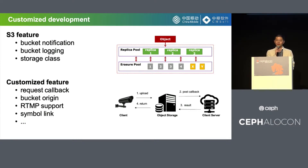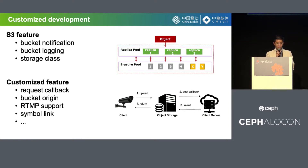Storage class is now implemented in the master branch. It is used to migrate data between different pools — we can create a pool with a replicated backend and a pool with an erasure-coded backend, and use storage class to migrate data between these two pools. Apart from S3 features, we also developed some customized features required by users, such as request callback, bucket origin, RTMP upload support, and symbol link.